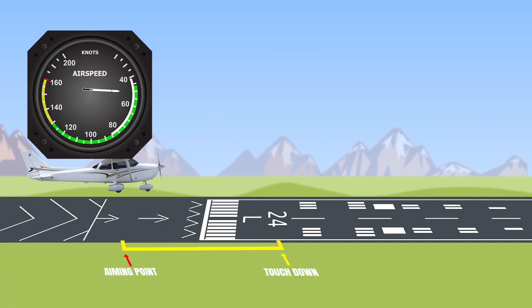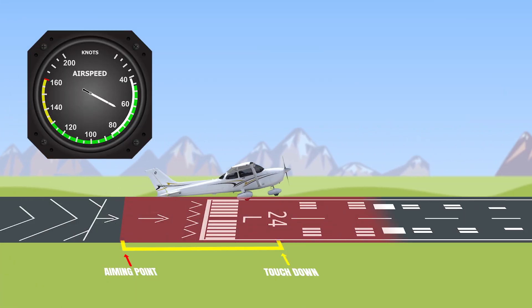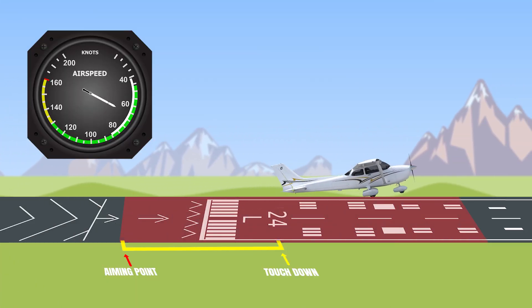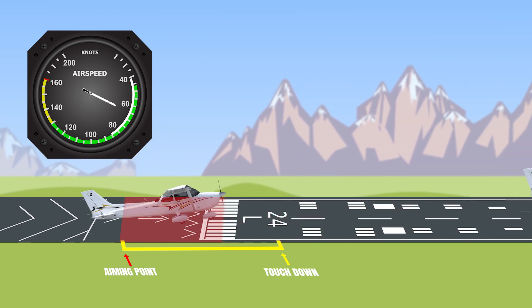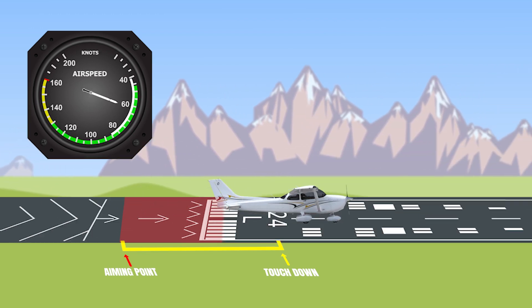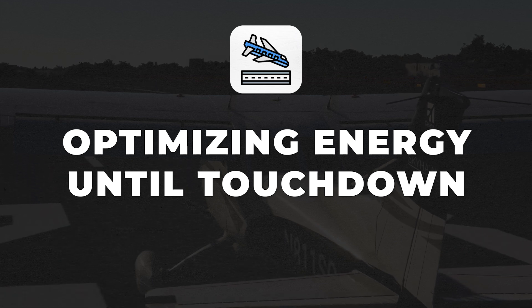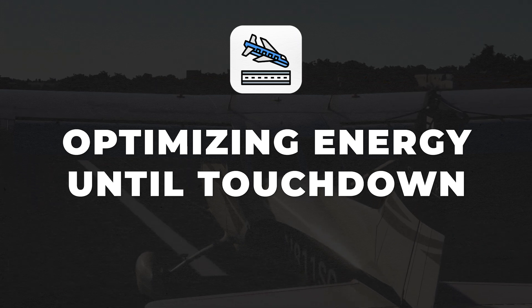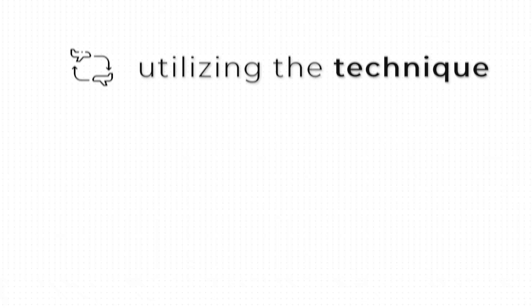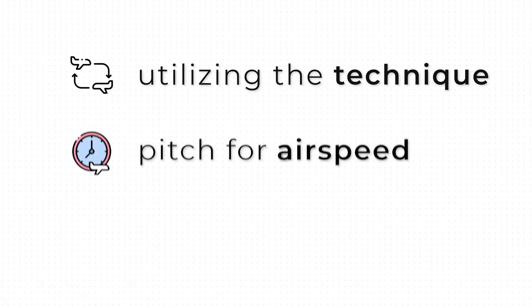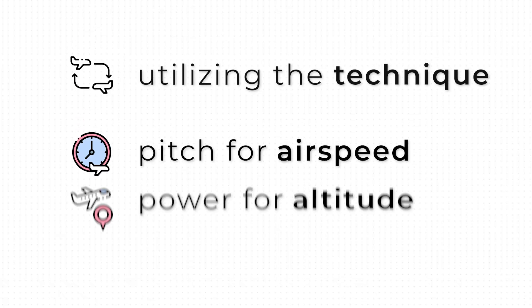If your final approach speed in a Cessna 172 is 65 knots, you will float significantly longer than if your approach was done at 60 knots. This leads me to the topic of this video: how do we best control the amount of each type of energy all the way down to our touchdown point? The answer is utilizing the technique pitch for airspeed and power for altitude.